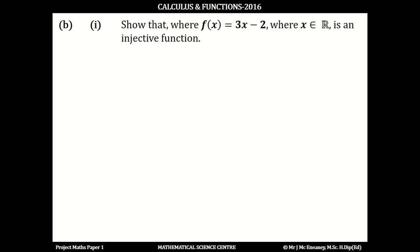Part (b)(i) then showed that f of x equals 3x minus 2, where x element of R is an injective function. So here the function f of x is 3x minus 2. And if we just evaluate this function at maybe x equals a, so f of a would just equal 3a minus 2.